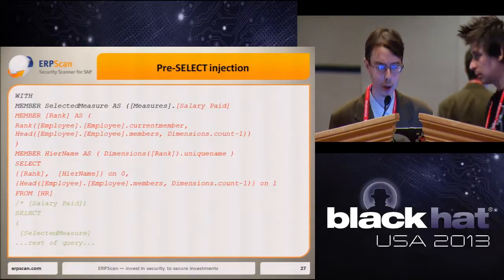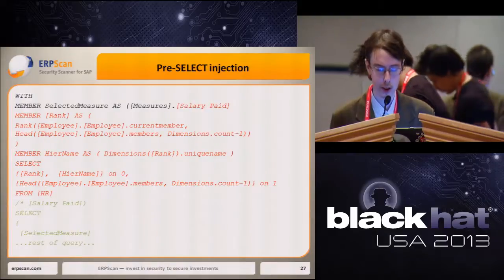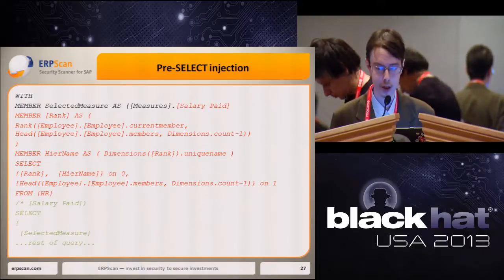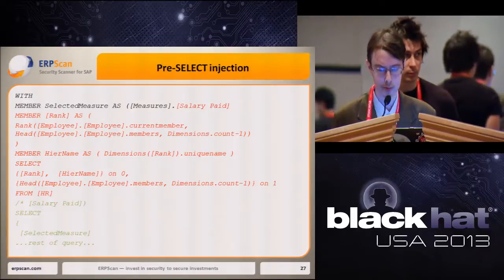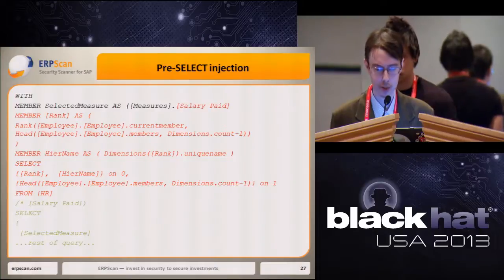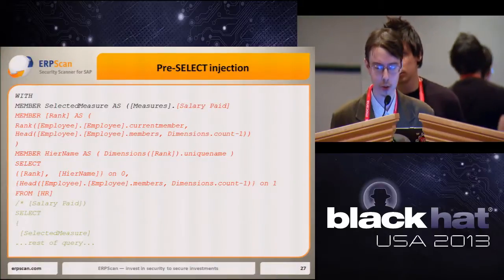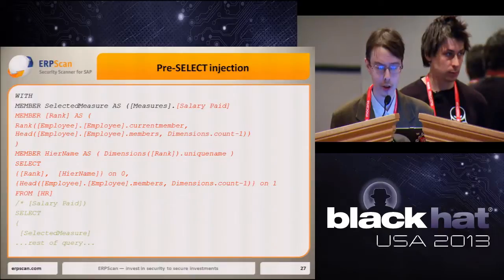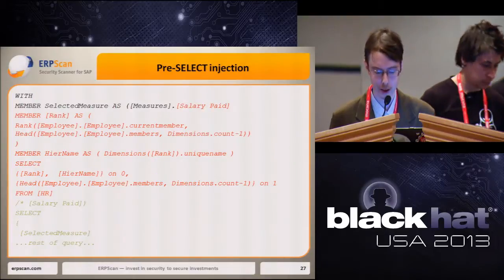Here is an example of a simple MDX injection into the pre-SELECT section. The injection code is highlighted in red, and it comments out the rest of the query. Here we inject code that will return almost all members of the cube hierarchy. We use special built-in MDX keywords such as DimensionCount, UniqueName, CurrentMember, and Members, which allow us to access cube hierarchy metadata.